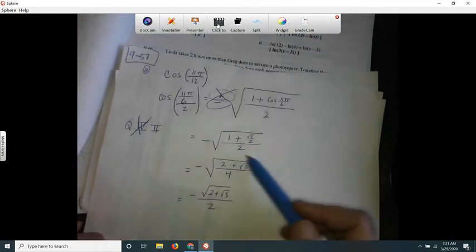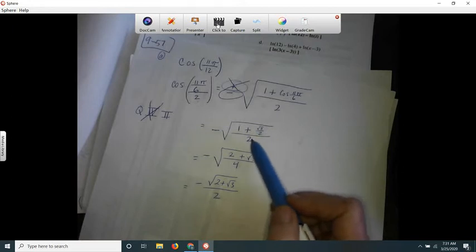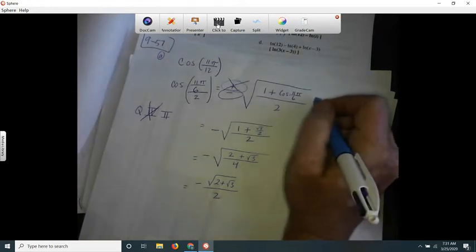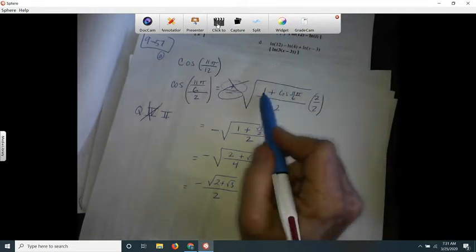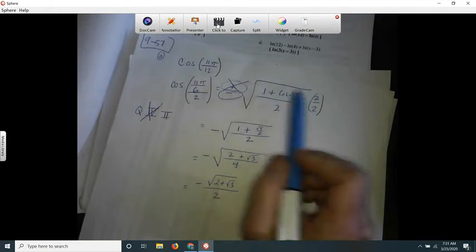Remember I said the angle is over here. So cosine is actually negative over here because cosine is the x values. Okay. So I'm going to choose the negative version of this. And then I clean this up. So what I do, I do it in my head. I just, I multiply everything by two. So in other words, I'm multiplying by two over two.